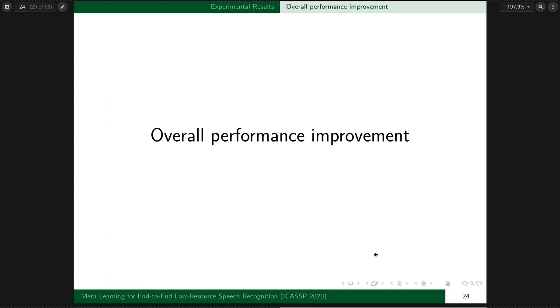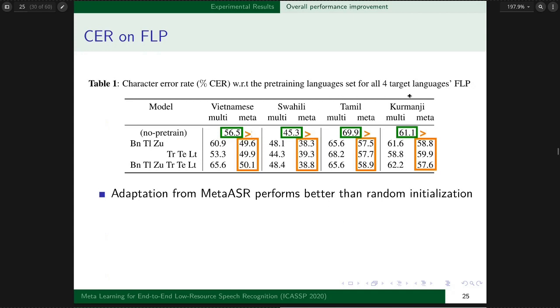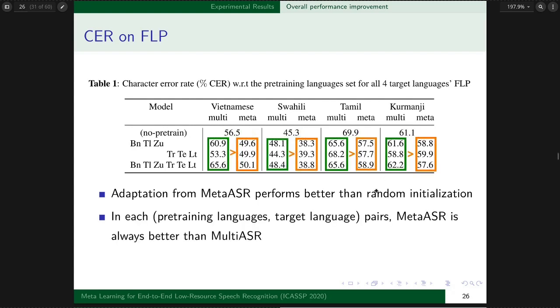Here are the results. Here is a table of character error rates of FLP for each target language. Lower values mean better performance. Each row represents different pre-training settings. No pre-train means random initialization. This row uses Bengali, Tagalog, Zulu as pre-training languages. For each target language, we report multi-ASR pre-trained and meta-ASR pre-trained initialization in different columns.